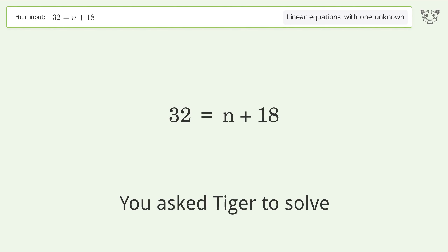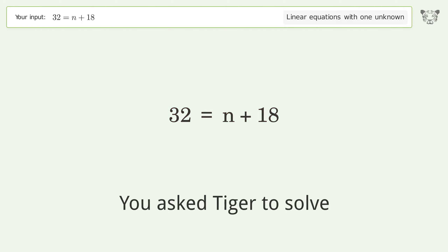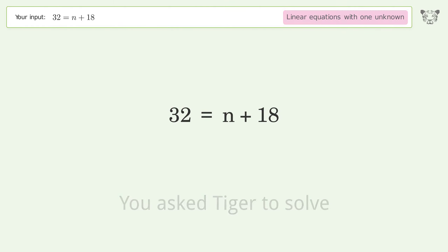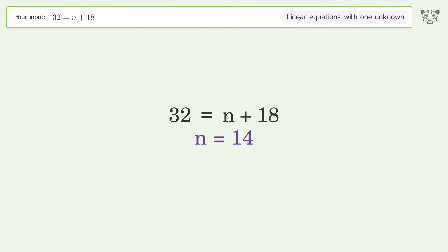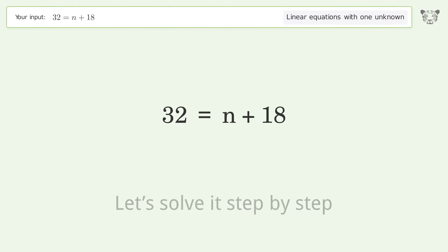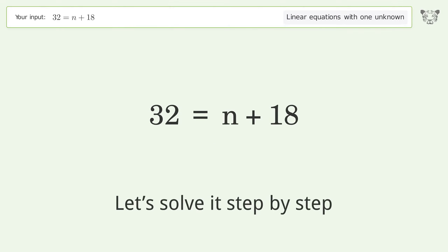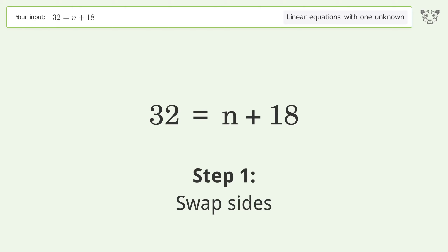You asked Tiger to solve this — it deals with linear equations with one unknown. The final result is n equals 14. Let's solve it step by step. Swap sides.